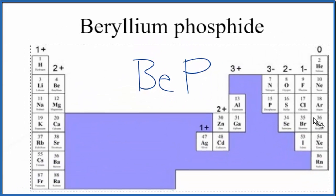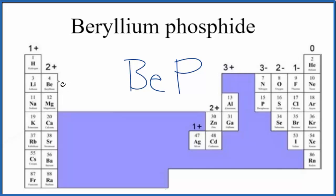Beryllium is in group 2, that's right here, so it'll have a 2+ ionic charge. And then phosphorus, right below nitrogen, has a 3- charge.